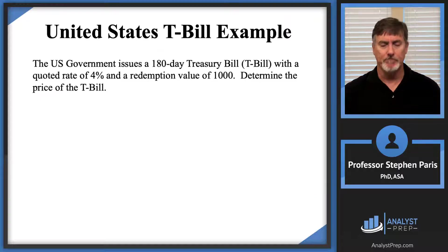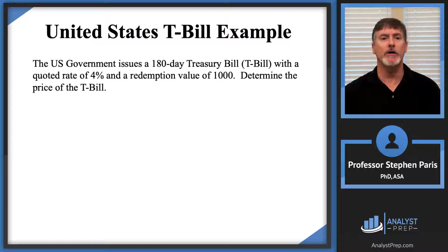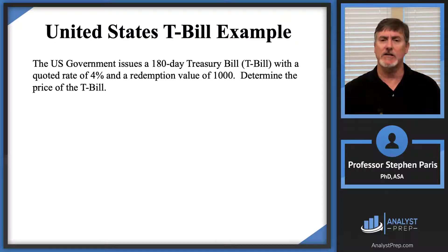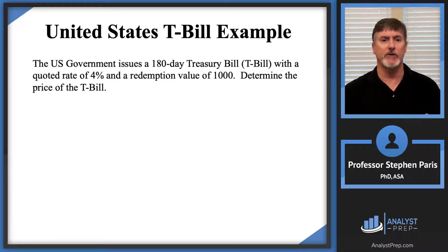So let's look at the problem. A US government issues a 180-day Treasury bill with a quoted rate of 4% and a redemption value of 1,000. The question is: determine the price of the T-Bill. This T-Bill is exactly the same as the Canadian T-Bill — they're both 180-day T-Bills, both have a redemption value of 1,000, a quoted rate of 4%, and we're asked to calculate the price.